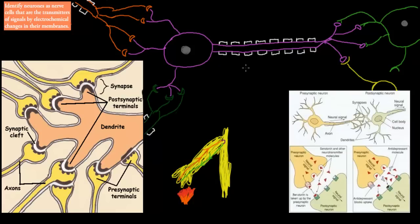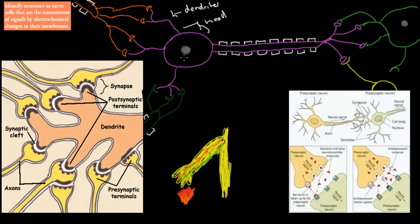We've talked a bit about neurons in the past. Remember, neurons consist of different structures. We've got the dendrites, which are structures that come off the head of the neuron. This whole structure here is the head of the neuron, and the head contains the nucleus, the mitochondria, the ribosomes — just the normal cell organelles.